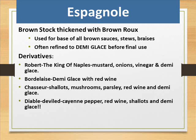Espagnol is brown stock thickened with brown roux, used as a base for all brown sauces, stews and braises. Often refined to demi-glace before final use. Derivatives include: Robert — mustard, onions, vinegar and demi-glace; Bordelaise — demi-glace with red wine; Chasseur — shallots, mushrooms, parsley, red wine and demi-glace; Diable — deviled cayenne pepper, red wine, shallots and demi-glace.